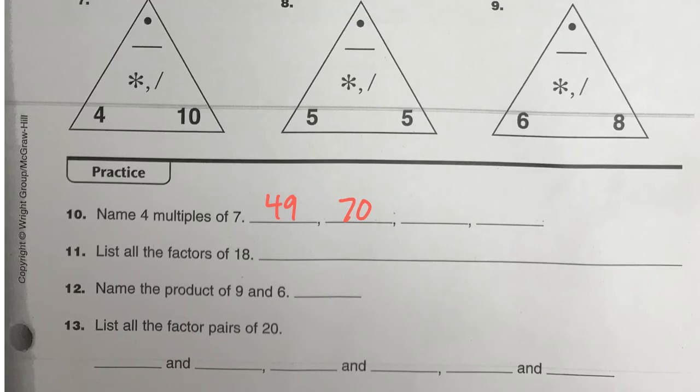Factors of 18. Well, you have 1 and 18, of course. And there are 4 more, I think. I think there's a total of 6 factors of 18.